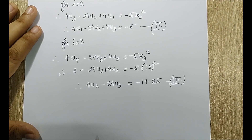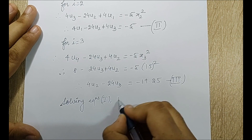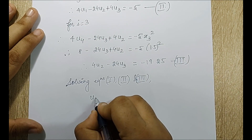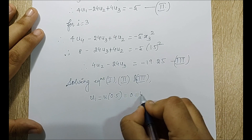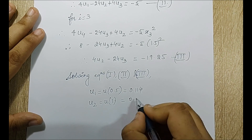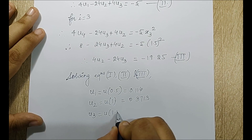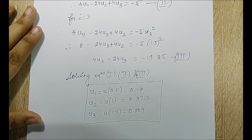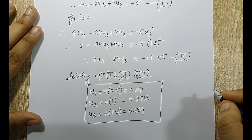Solving equations 1, 2, and 3 simultaneously gives: u₁ = u(0.5) = 0.114, u₂ = u(1) = 0.3713, and u₃ = u(1.5) = 0.864. These are the values obtained by the finite difference method. Next, I will solve the same problem using the exact method.